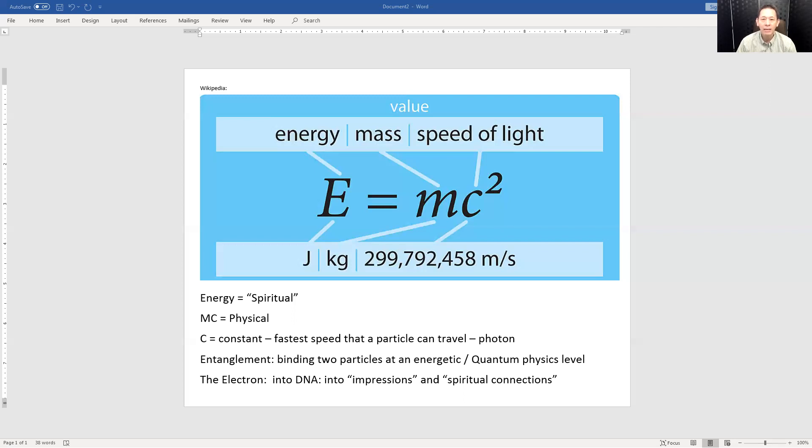Entanglement is a principle, even a law in quantum physics, where you can bind two particles in an energetic way. And this is so important to understand at an energetic level because it proved and showed that when entanglement happens and when these two particles are bound with entanglement, they act in unity as one particle.